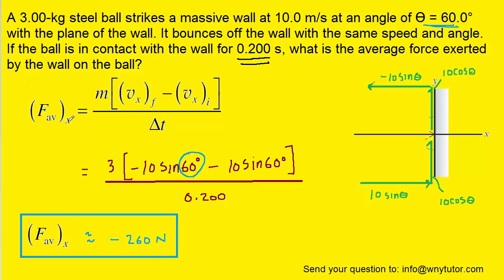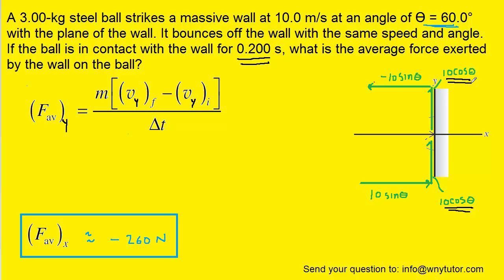We now have to perform the calculation, but this time for the y direction. So, we're going to change the subscripts from x's to y's. So, we've done that for the average force, the final velocity, as well as the initial velocity. Let's recall that the initial velocity in the y direction was positive 10 cosine theta. And the final velocity in the y direction was also positive 10 cosine theta.